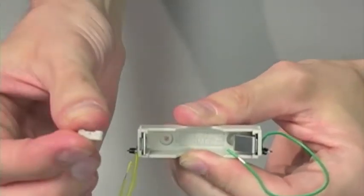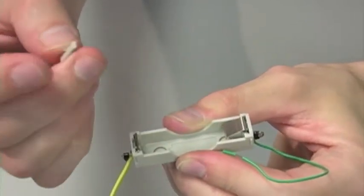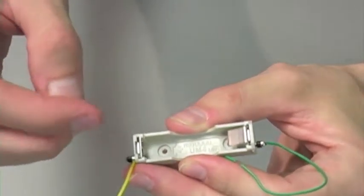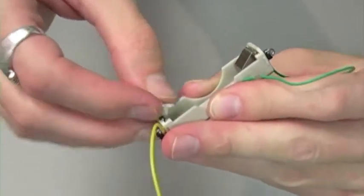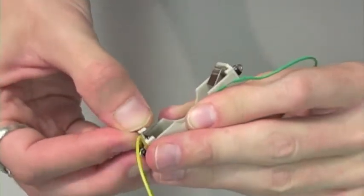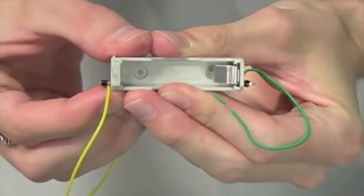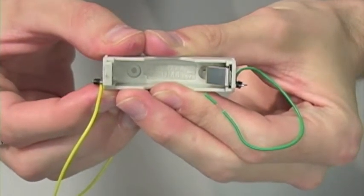Repeat this process on the other side using the green wire. Now we're going to take our little plastic cover plate and we're going to snap that into place right over our positive terminal. Step one complete.